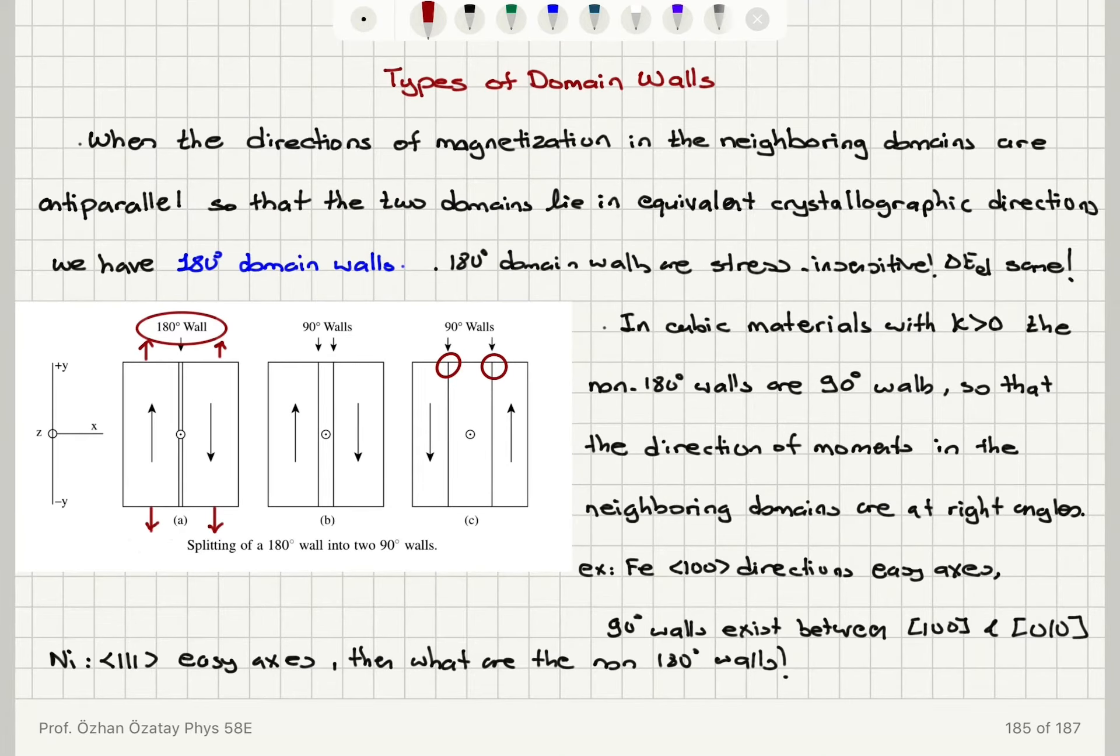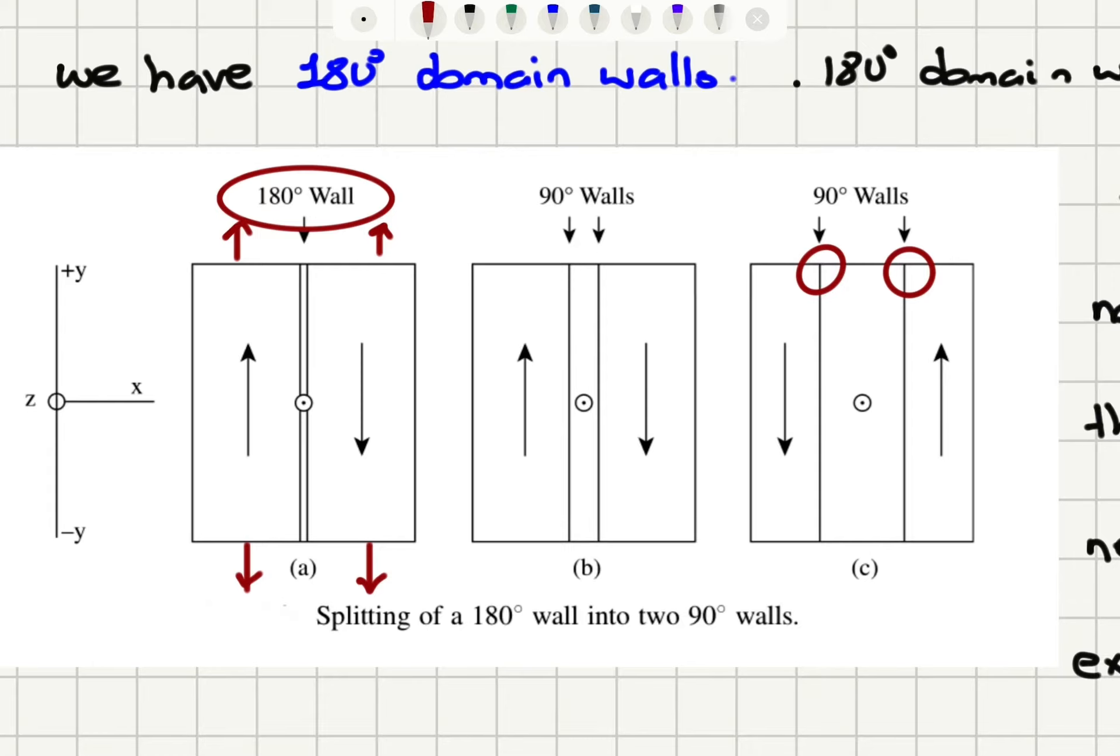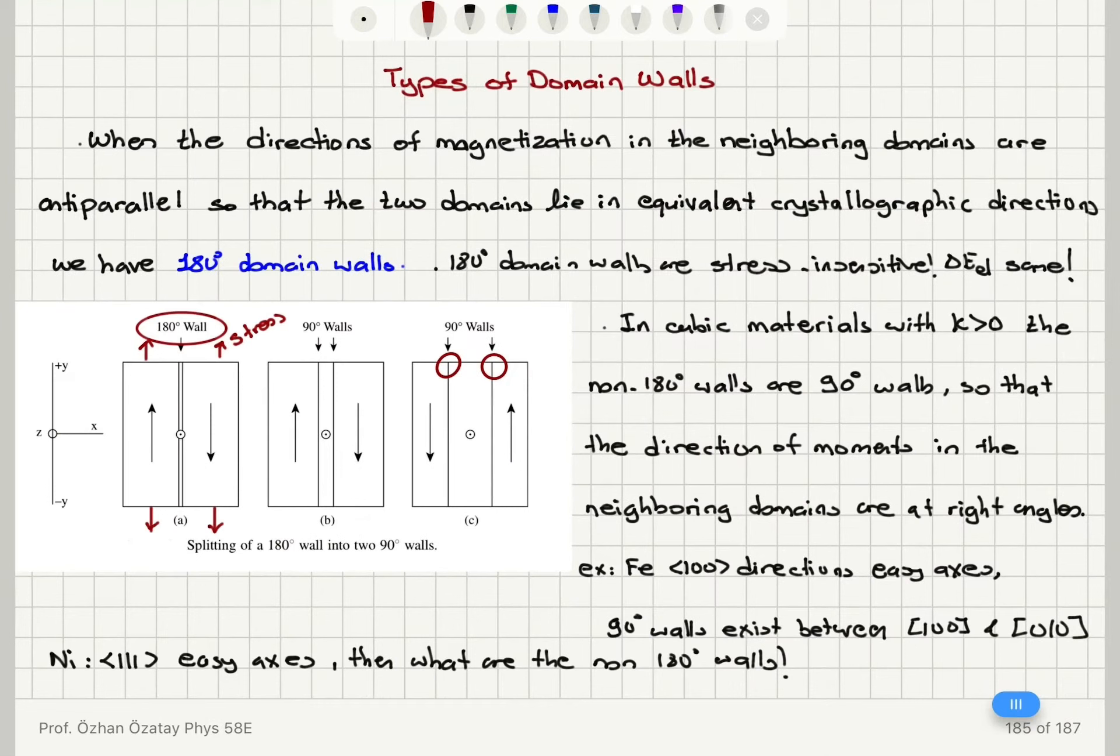One property of these 180 degree domain walls is that if you apply a stress in this direction, because the magnetoelastic energy will be lowered by the same amount in the two domains, it will have no effect on the domain wall. So we see that the 180 degree domain walls are stress insensitive because the decrease in the elastic and magnetoelastic energy is the same.